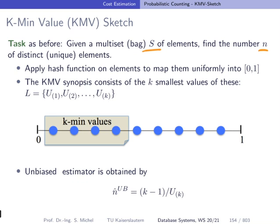Of course we don't know n. The idea is you want to estimate it. What KMV is doing is taking a hash function which maps the elements uniformly—this is important for the estimator to work—so the hash function maps the elements uniformly to the 0 and 1 interval.